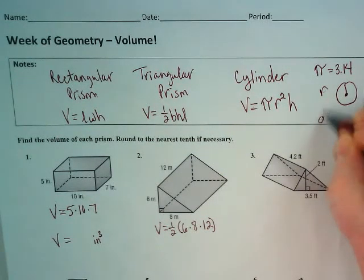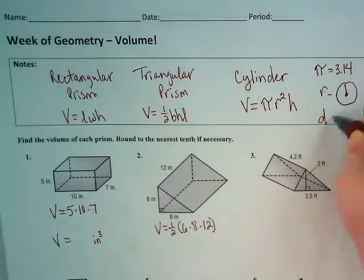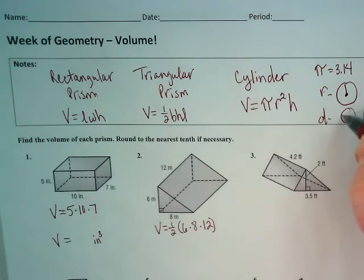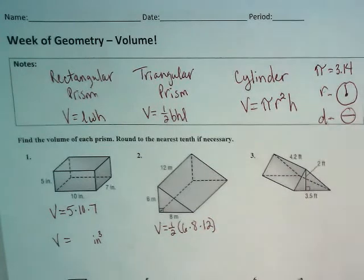So if you have a circle that has a line going all the way across, that's the diameter. If you're looking for the radius, which is half of that.